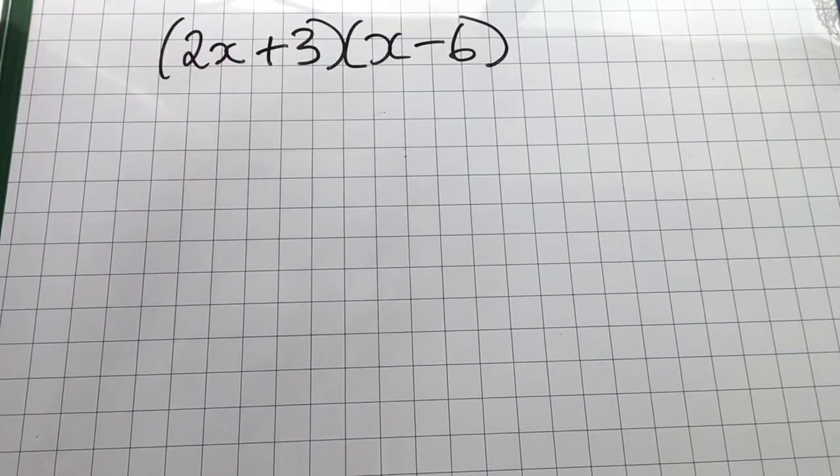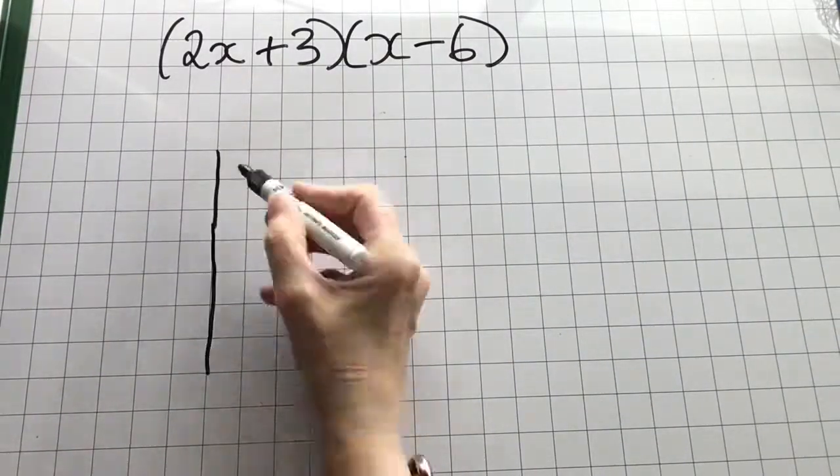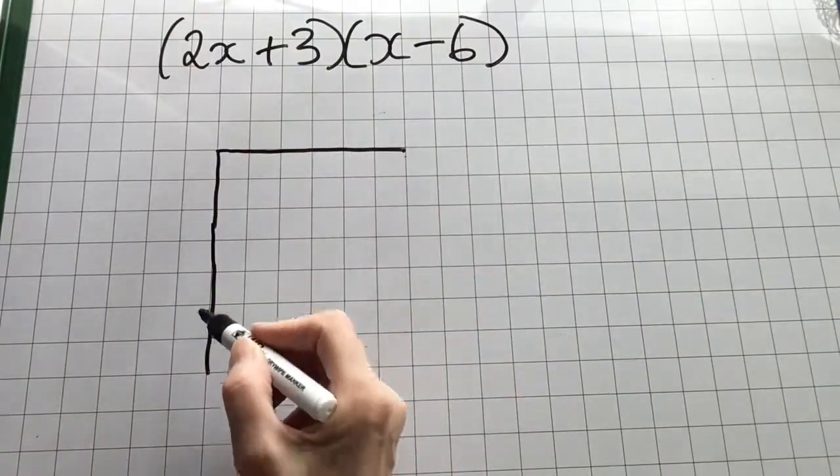Here we're multiplying another two expressions together. Both have two terms. But note in the first expression, the x has got a coefficient of 2.